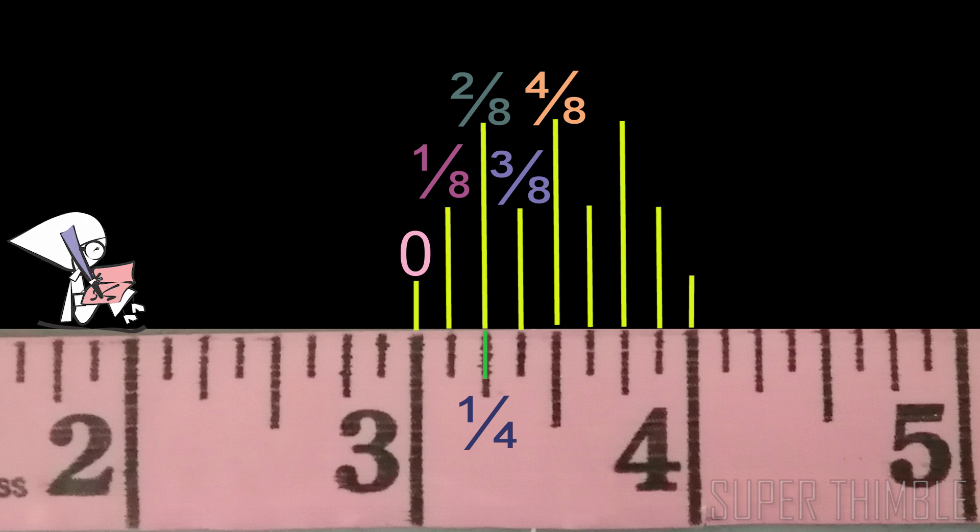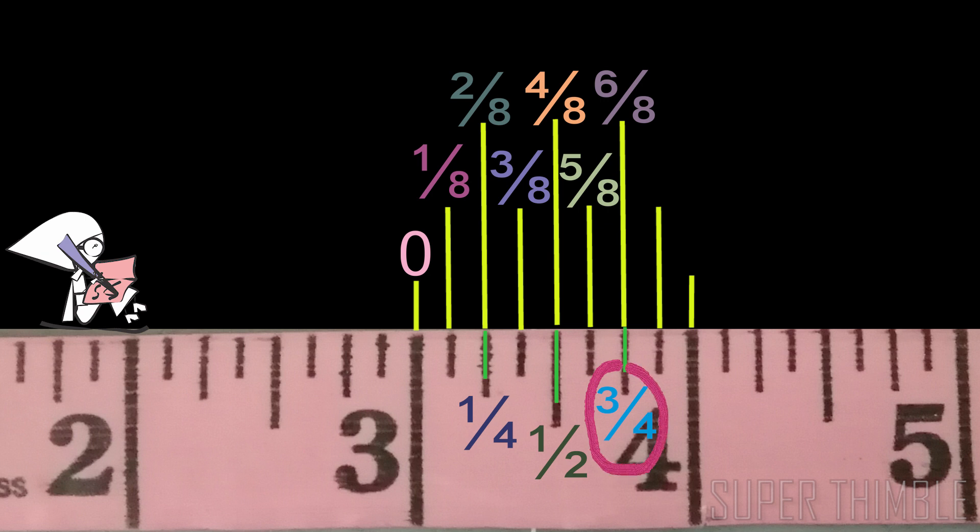The next is 5/8 inch, 6/8 inch which gets divided further to 3/4 inch, then 7/8 inch, lastly 8/8 inch which again gets divided and becomes 1 inch.